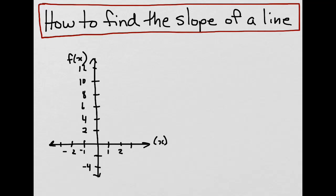To determine the slope of a line, we need at least two points on the line. Let's say that we had the points (0, -2) and the point (2, 12).